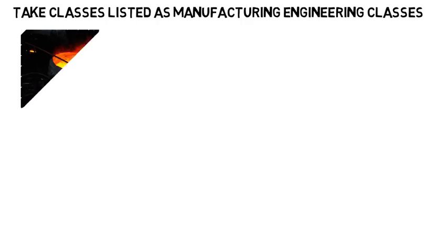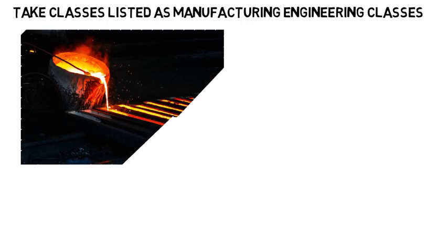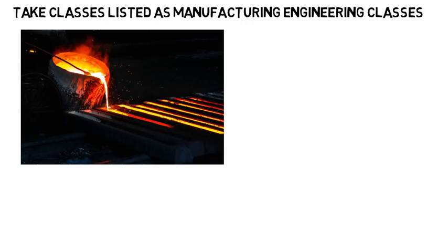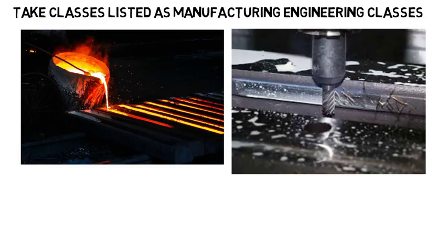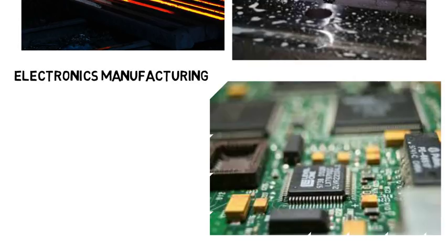You'll learn the basics of manufacturing processes like casting — pouring hot molten metal into a certain mold so it can solidify into the proper shape — or different machining methods such as milling, and more. You can also take classes on electronics manufacturing and the fabrication of electronic products, printed circuit board assembly, and how these are actually made.